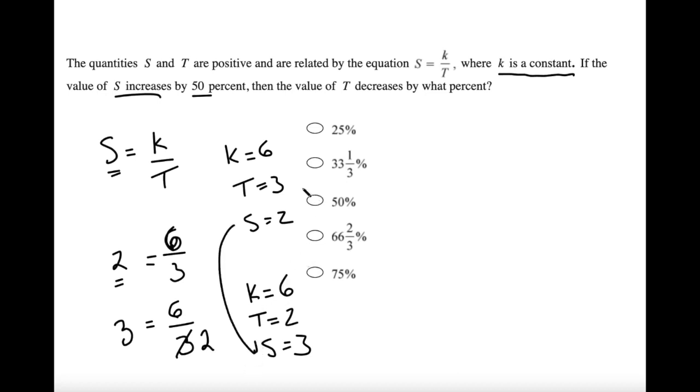But we decreased t from 3 to 2. And if you know your percents, that is a 33% reduction. We decreased it by 1 third. If you're a little rusty on percents, I would go review that. Answer here is b.